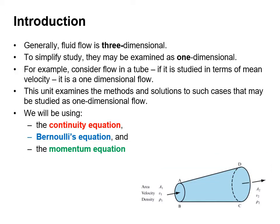Generally, fluid flow is three dimensional. But in order to examine fluid flow, we often simplify this and consider it as one dimensional. For example, if we consider the flow in a tube studied in terms of its mean velocity, then this is a one-dimensional flow. This unit examines the methods and solutions to such cases, and we're going to study flow as one-dimensional flow using the continuity equation, Bernoulli's equation, and the momentum equation.